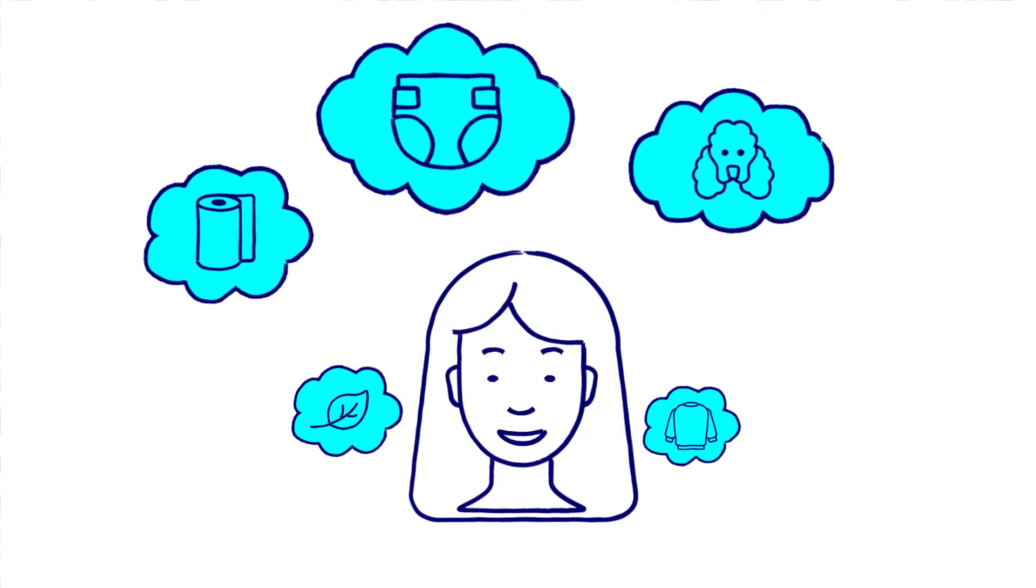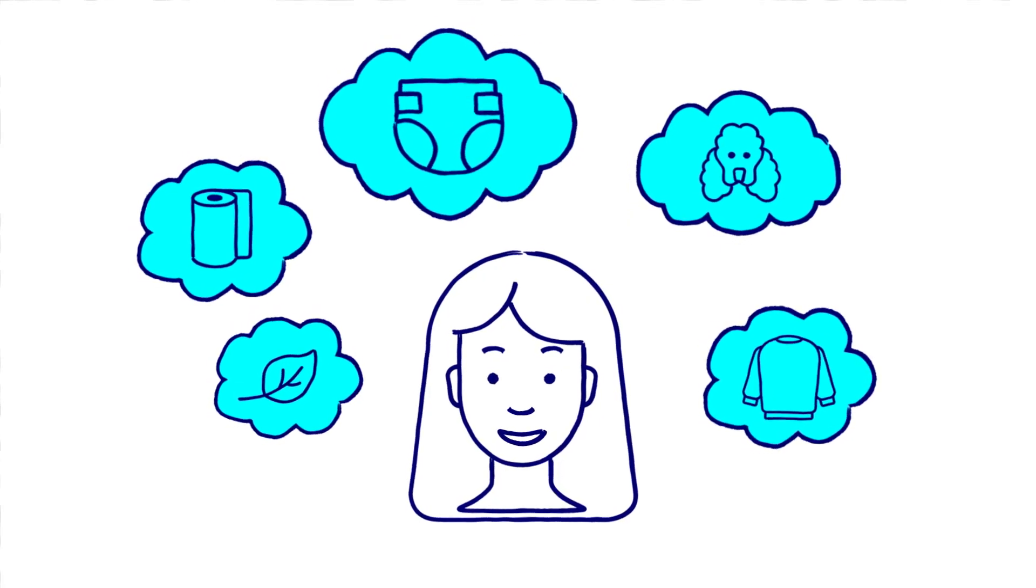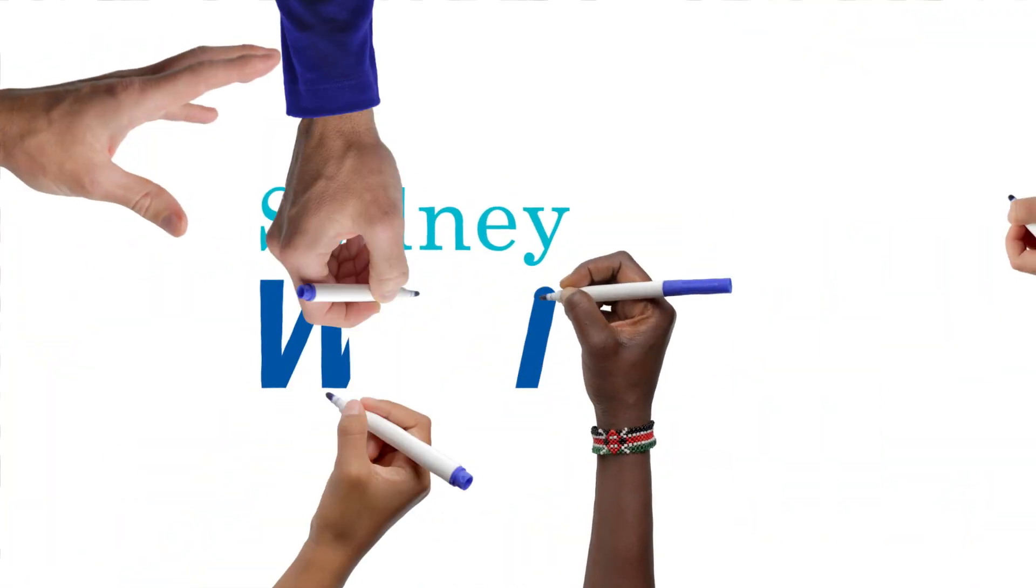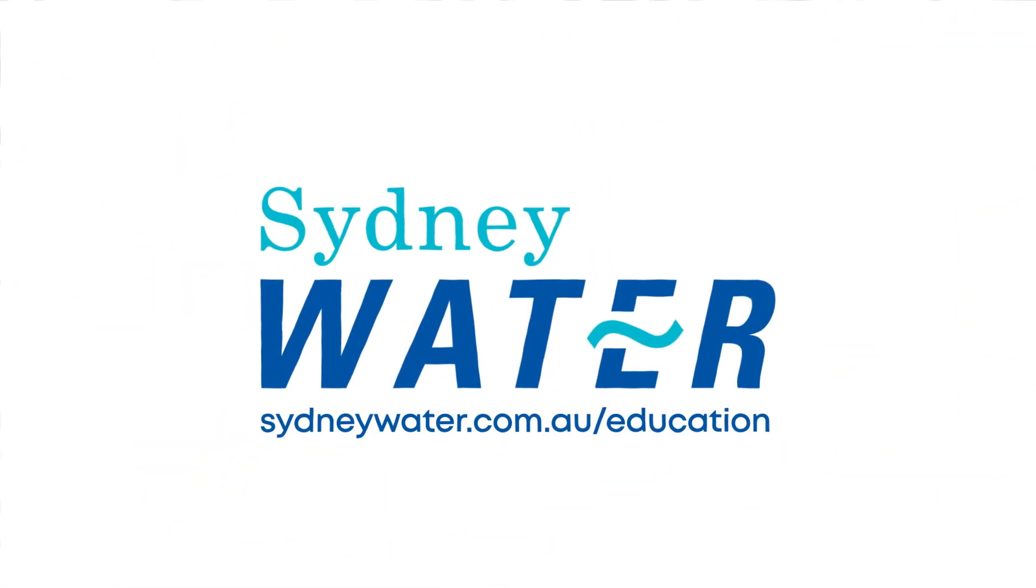What else could you use as a filter? Paper towels, leaves, a nappy, some dog hair or dad's jumper? Let's not get too silly. There's lots to learn about water so visit sydneywater.com.au forward slash education.